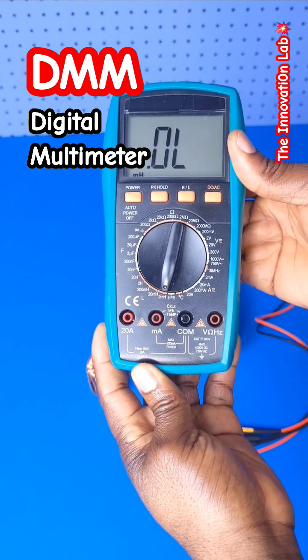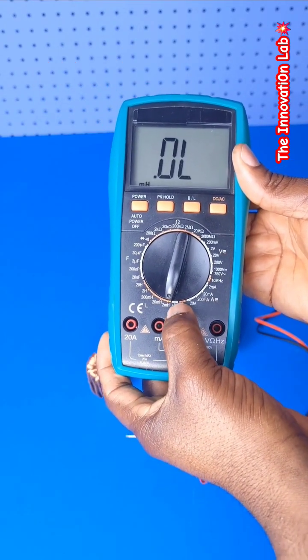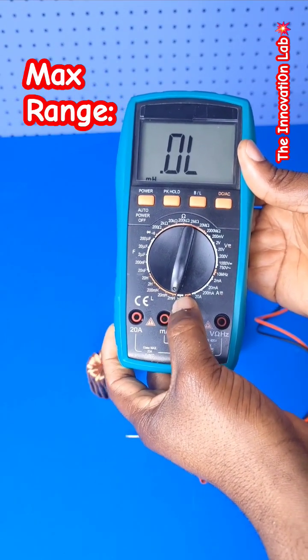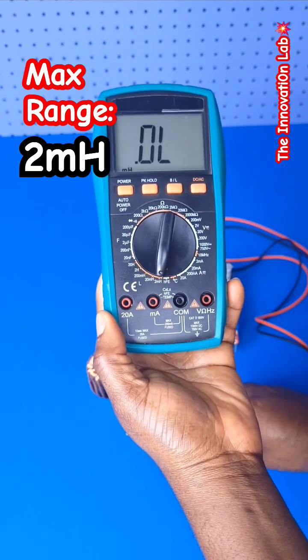Because the range of the inductance I'm hoping to measure is in microhenries, I have it set to 2 millihenries so that should be able to cover the range. After that, all you have to do is plug in your probes.